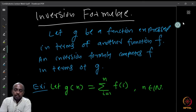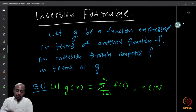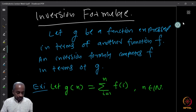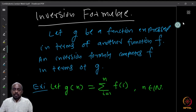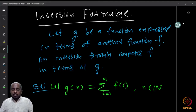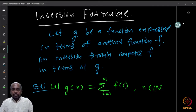Before going further, let us look at what is called inversion formulae. What is an inversion formula? Suppose you are given a function g that is expressed in terms of some other function f. An inversion formula is a formula that computes the function f in terms of g. So you are given g in terms of f, and now you want to find out what f is in terms of g.